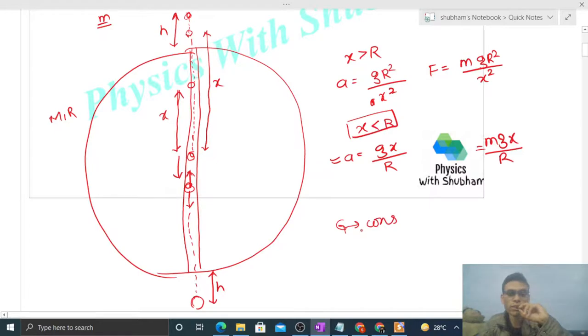Why will it go to the same height? Because the only force acting on this body is the gravitational force of attraction, which is a conservative force. If only conservative forces act, we can conserve mechanical energy—kinetic energy plus potential energy sum is constant. Initially kinetic energy was zero at height h, so finally it will be zero at height h.